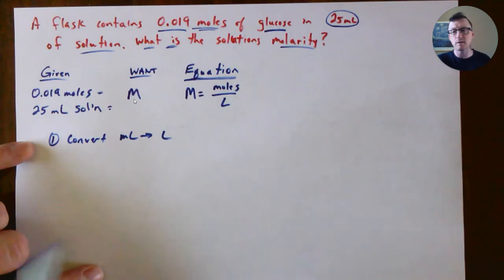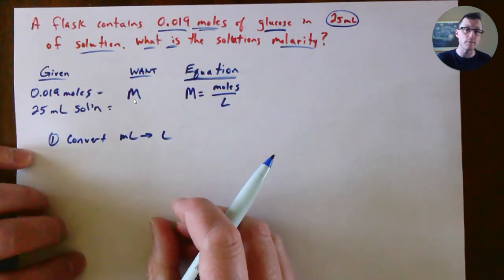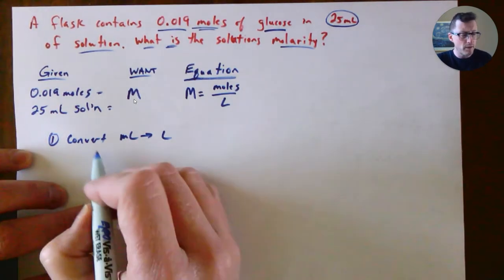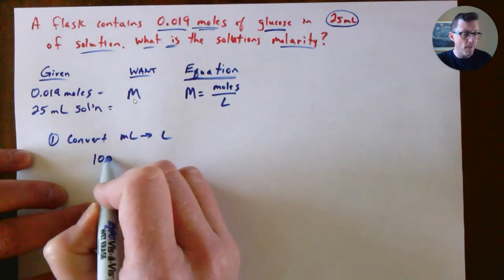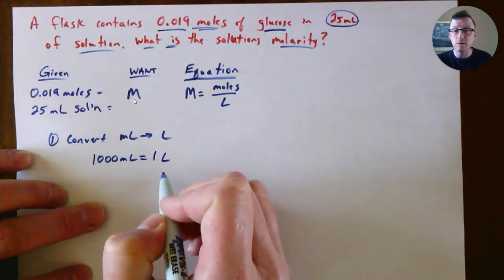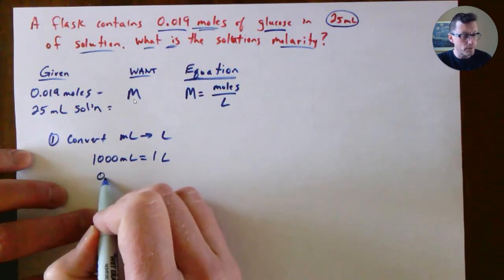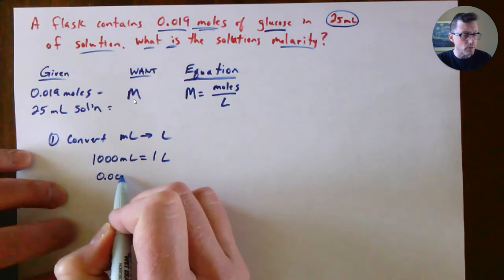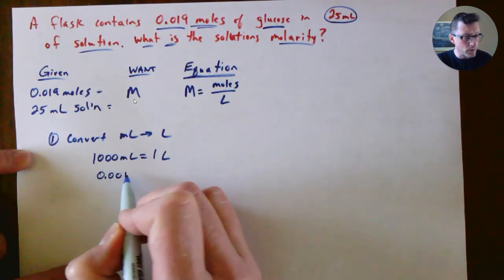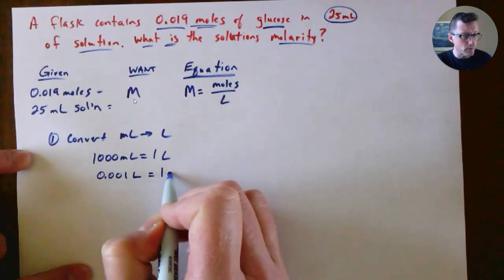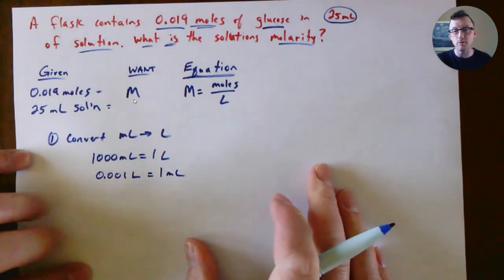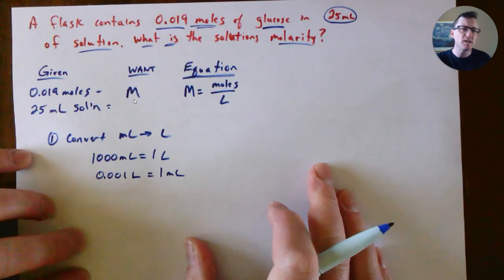To do that, go back to what we learned in metric conversions. We know that 1000 milliliters equals one liter. The key is you can write that as a fraction.